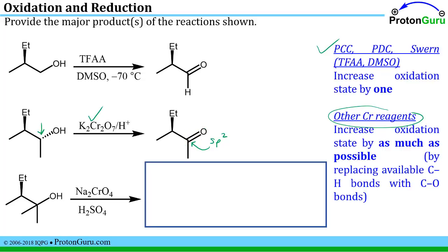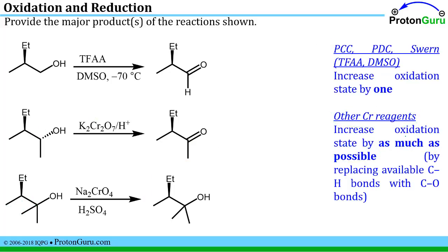The last reaction uses one of the strong chromium reagents that can increase the oxidation state by as much as possible. However, looking at this carbon, there are no hydrogens — it has a methyl group, another methyl group, and another alkyl group. The maximum possible increase is zero, so we cannot increase the oxidation state at all. There is actually no oxidation reaction between these two species.